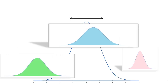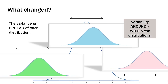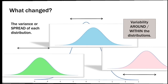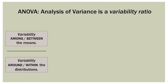Now what's different if I stretch each one of these sample distributions out? What changes is the spread or variance of each distribution. We call this the variability around or within the distributions. Before we talked about the variance between the distributions — the distance of each mean from the overall population in the background. That was variability between. This is variability within — within each sample distribution. At its heart, ANOVA is really a variability ratio: the variability between the means divided by the variability within the distributions.